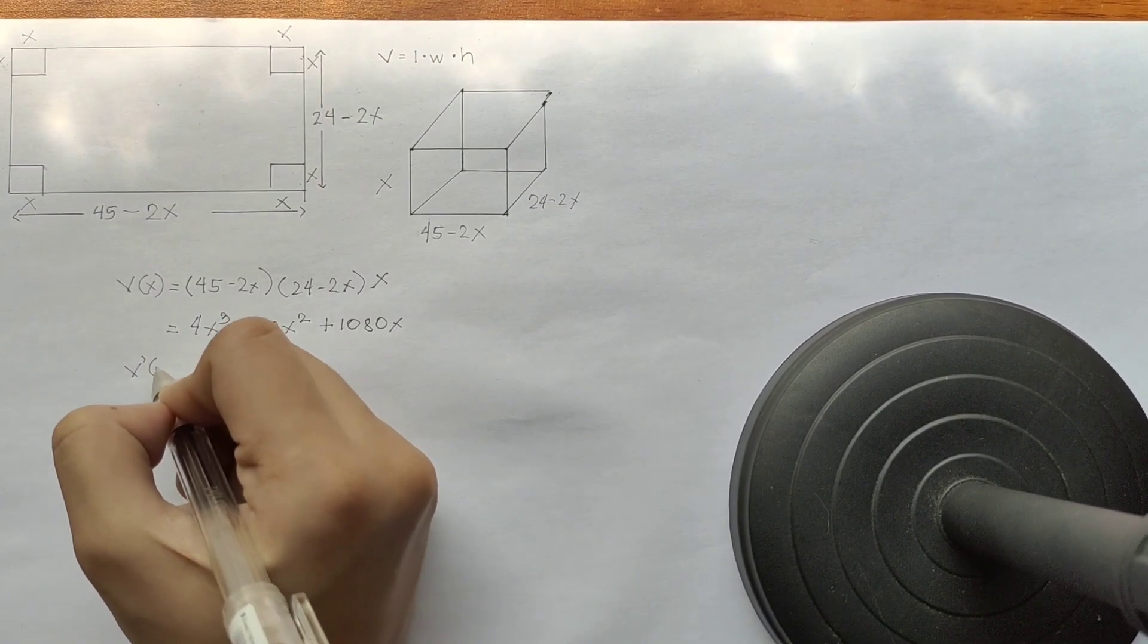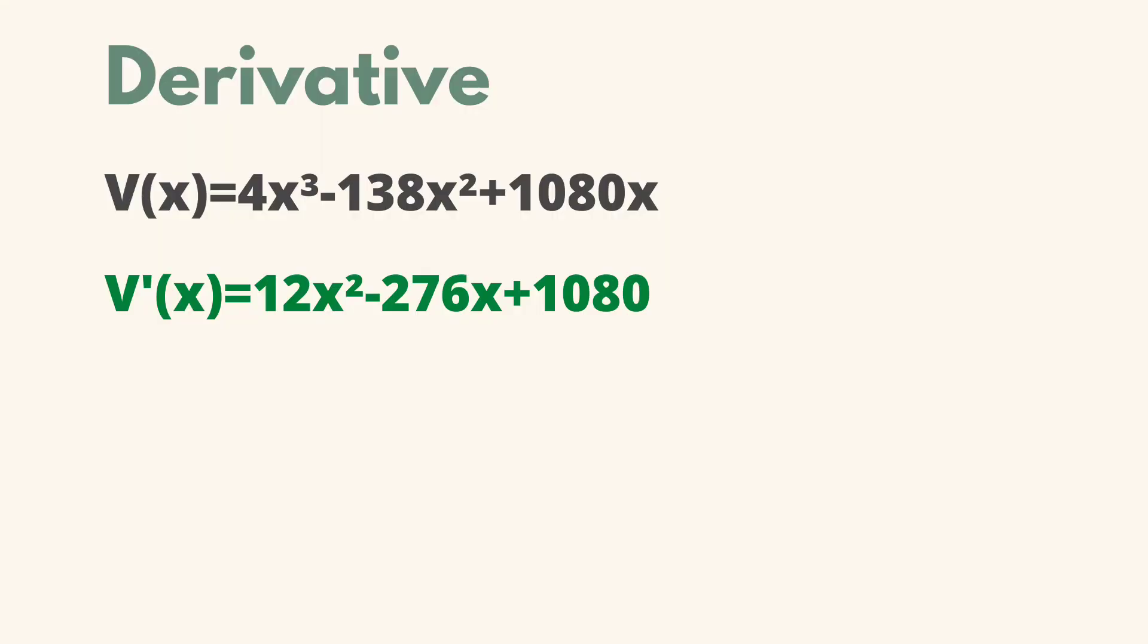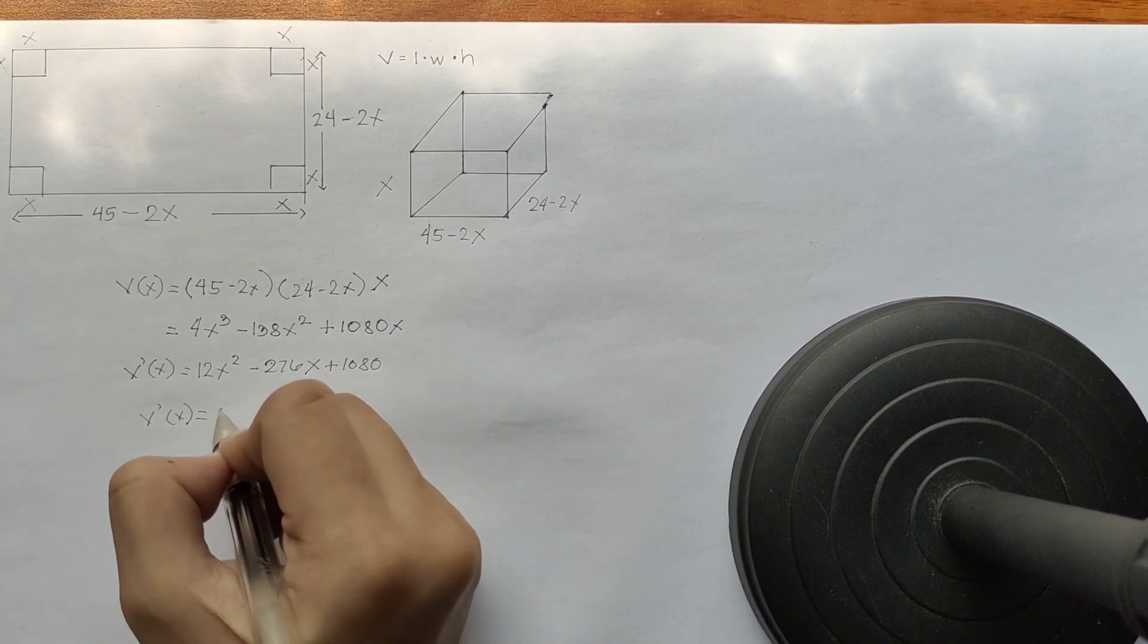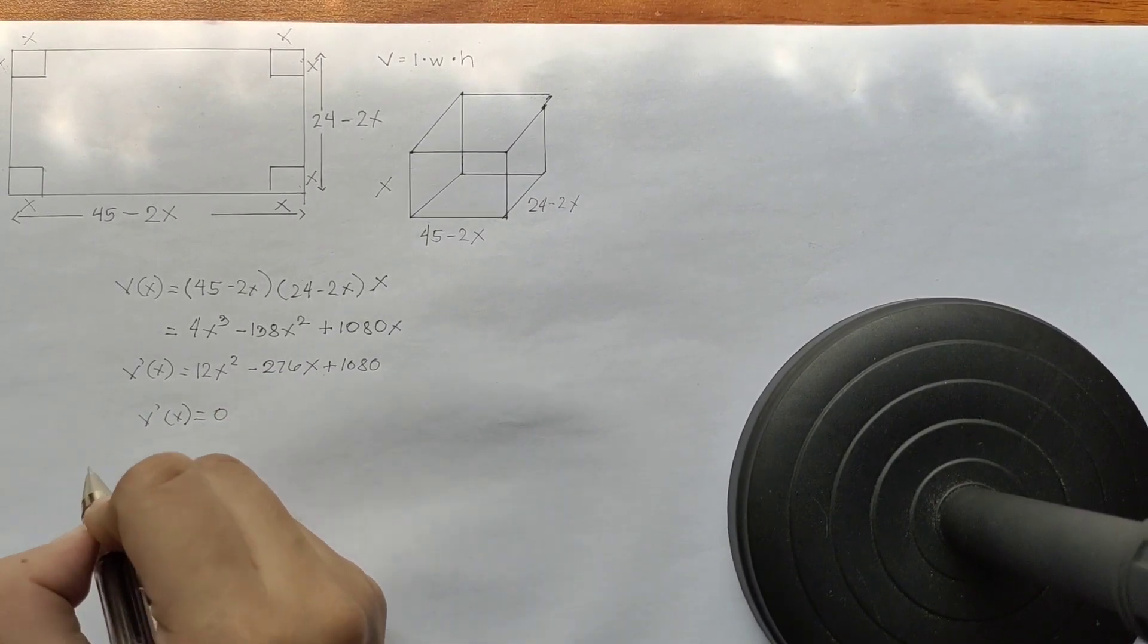So v prime of x. Let's create that. The v prime of x is 0. Let's set that to 0. Now we have...